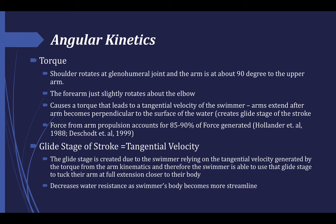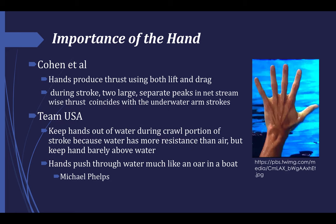The swimmer is able to use this tangential velocity during the glide stage because they tuck their arms at full extension closer to their body, which allows them to decrease water resistance as the swimmer's body becomes more streamlined. So with increased force generation and streamlining of the body preferred, it is also vital that we discuss the role of the swimmer's hands. While they may seem like an accessory at times, the hands play a vital role for increasing drag and decreasing lift. This means that when the arm is in the water, the hand plays a part in the thrust created during the downstroke phase, which is seen by the large separate peaks in net streamwise thrust found in the study by Cohen et al. This is because, as Team USA's swim team puts it, when in the water the hands act like the oars used during rowing.